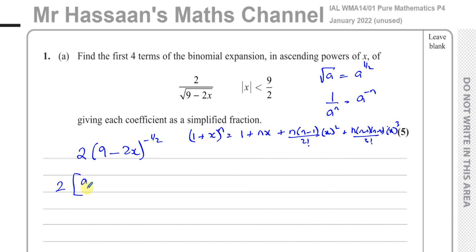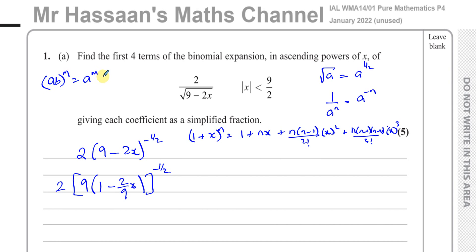What I'm going to do is take out the 9 and write 1 here, so that's 9 times (1 minus 2/9 × x). Then I'll write to the power of negative one half. That negative one half applies to both the 9 and this bracket, but not the 2. So I can write this as 2 times 9^(−1/2) times (1 − (2/9)x)^(−1/2).